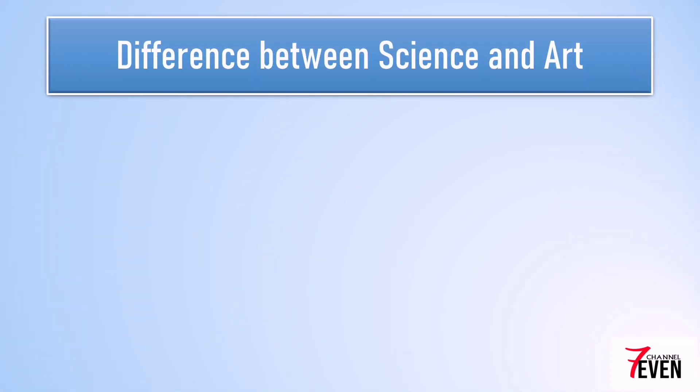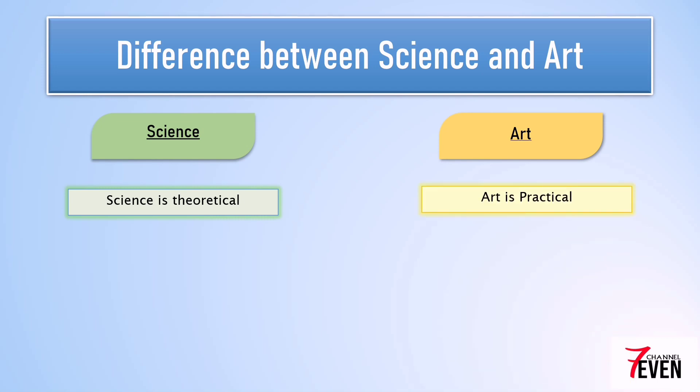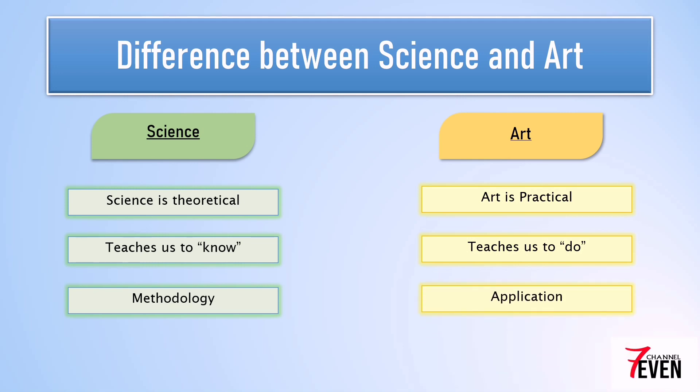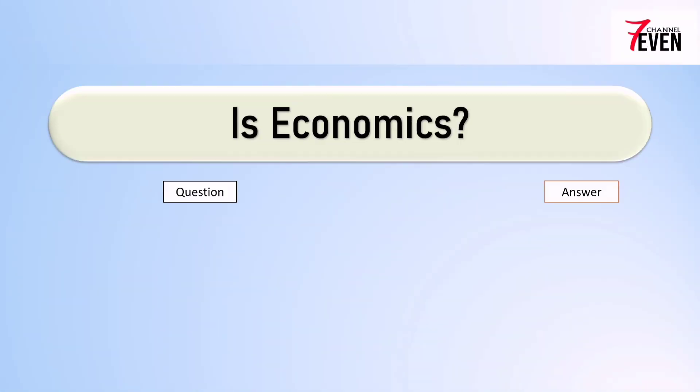Is it different from science? What are the differences between science and art? There are a few. Science is theoretical knowledge, but art is practical knowledge. Science teaches us to know, but art teaches us to do. Science is a methodology, but art is an application.